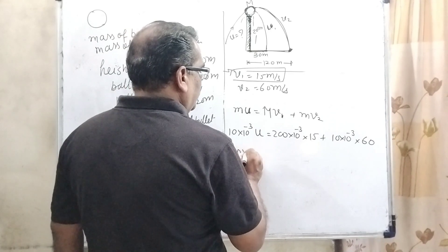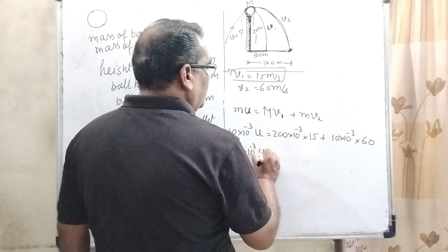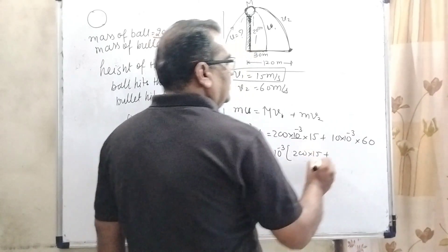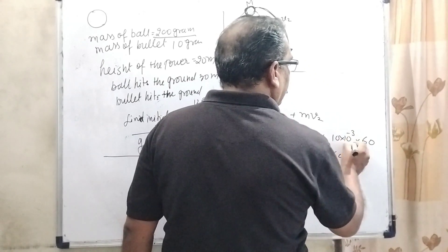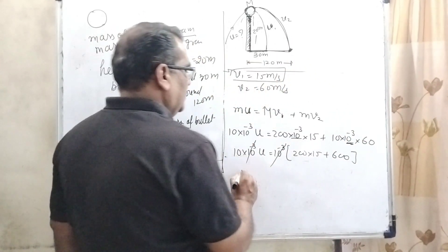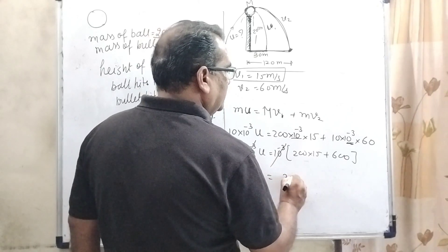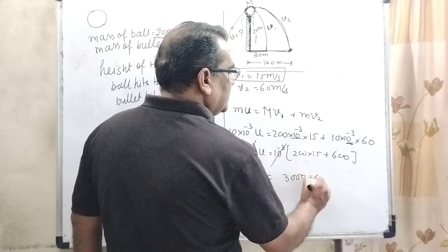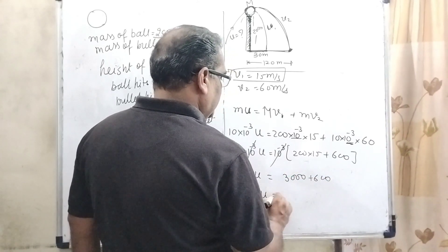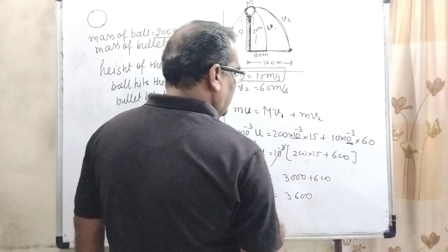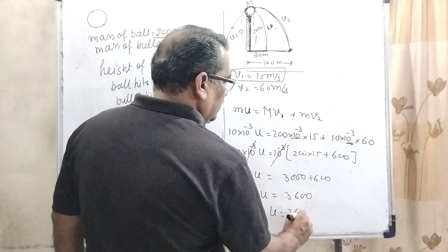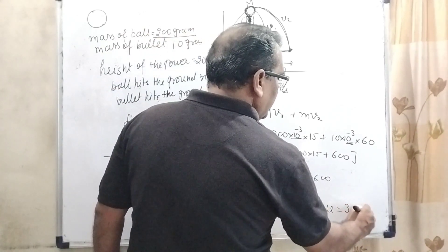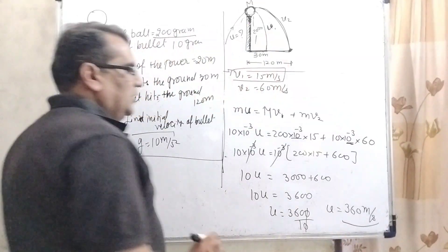So 10 into 10 raised to the power minus 3 times U. 10 raised to the power minus 3 gets common. 200 into 15 and here 600. 10 raised to the power minus 3 gets common and cancels out. So 10U is equal to 3000 plus 600. 10U is equal to 3600 divided by 10. So initial velocity of the bullet is 360 meter per second. So it is the correct answer. I hope you understood this question.